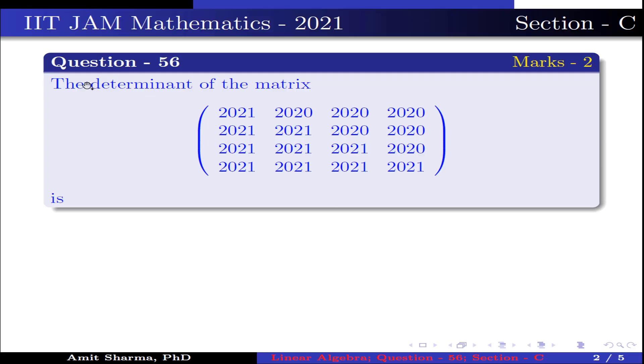Question is, the determinant of the matrix having elements 2021, 2020, 2020, 2020 in the first row, 2021, 2021, 2020, 2020 in the second row,